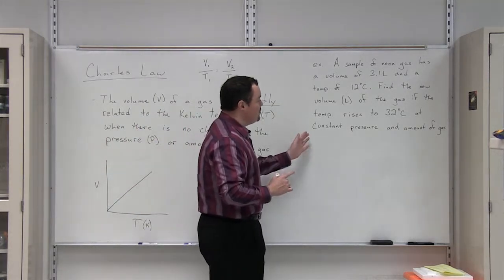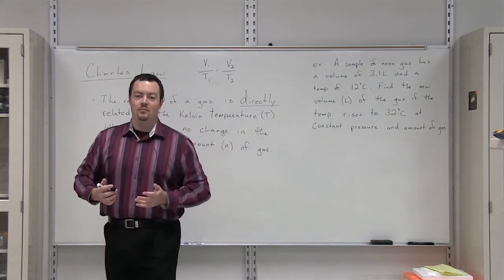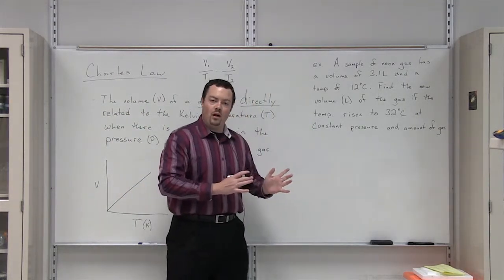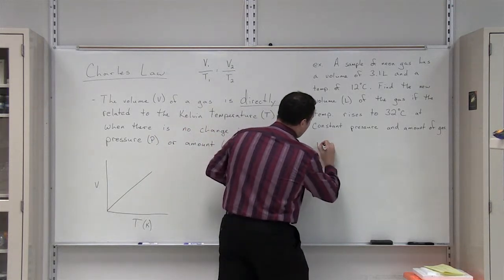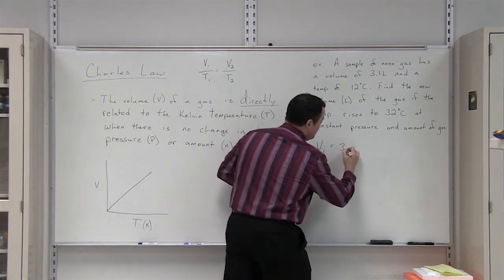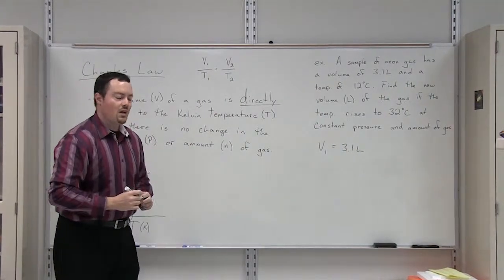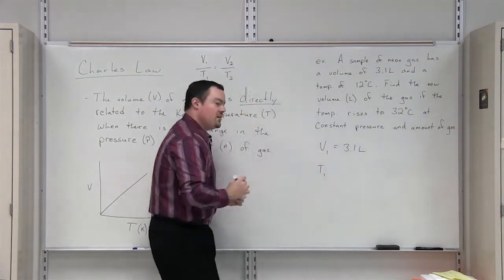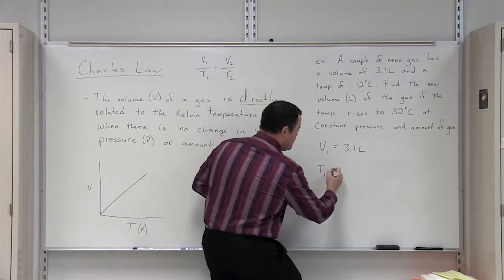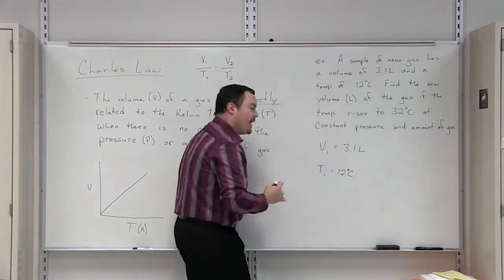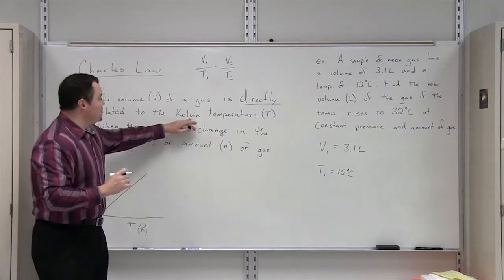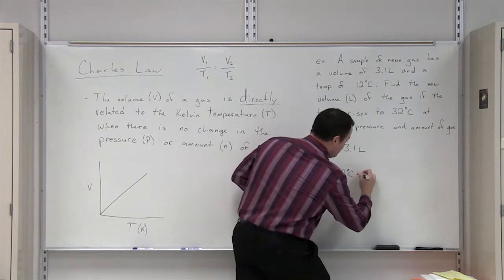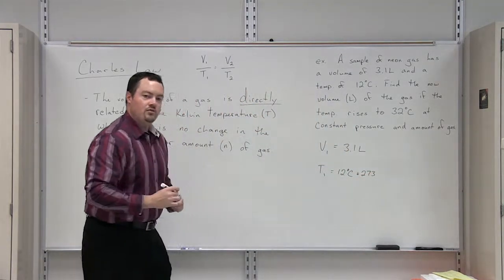The first thing you need to do is determine what variables the problem gives to you. It tells us that this neon gas in condition number 1 has a volume of 3.1 liters. It also tells us that temperature at condition number 1 is 12 degrees Celsius. However, the temperature has to be in Kelvin. So in order to convert a Celsius temperature to Kelvin, we add 273.